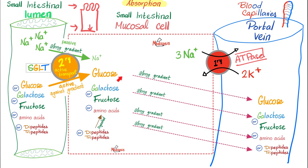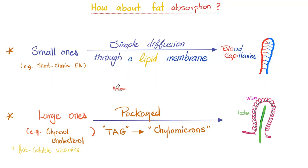That was the story of carbohydrates and proteins. How about absorption of fat? If you are small fat, the membrane is made of lipid — lipid can diffuse through lipid — and you reach the blood capillaries. But the problem is with the big fat molecules: they are very thick and cannot go to blood vessels. Therefore, you have to package them — they become triacylglycerol packaged as chylomicrons, enter the lacteal, and travel through the lymph system.